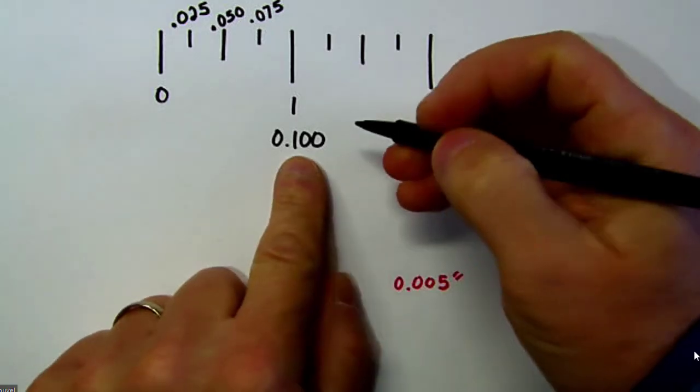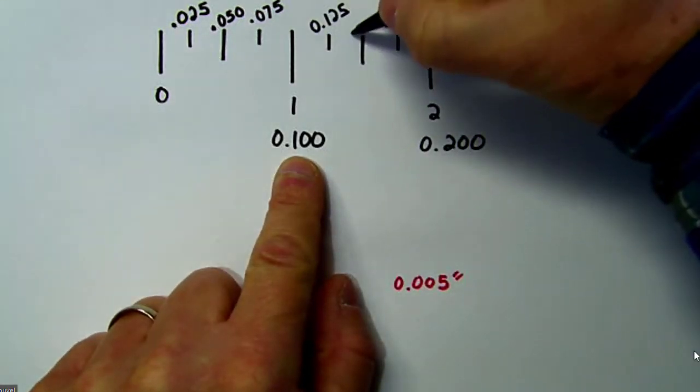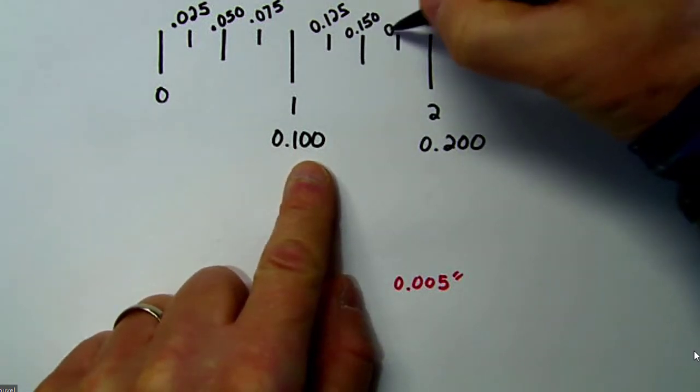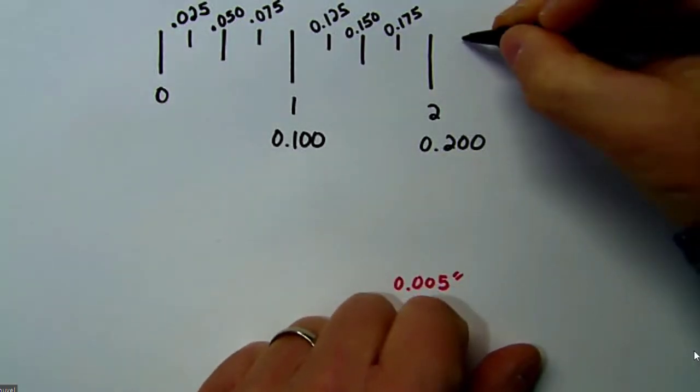So once we get past the one, this first tick mark here would be .125, and then .150, and then the third one is .175, and then we'd hit the two. And the next mark beyond that, of course, would be .225.